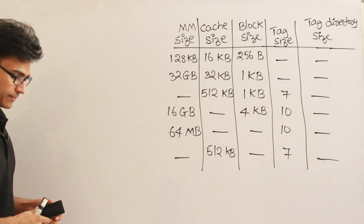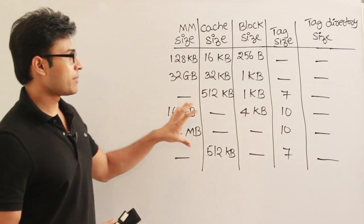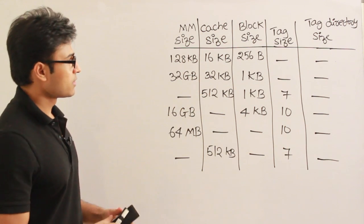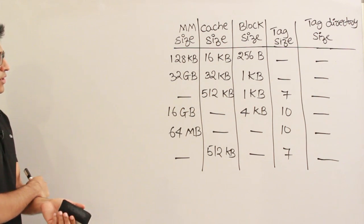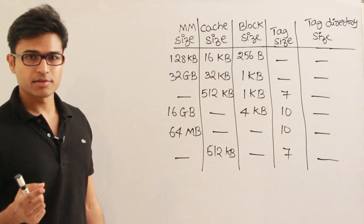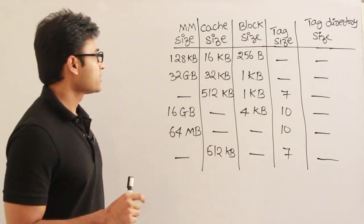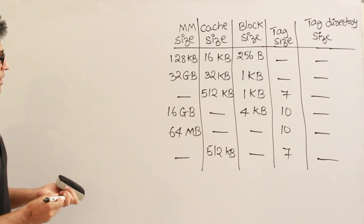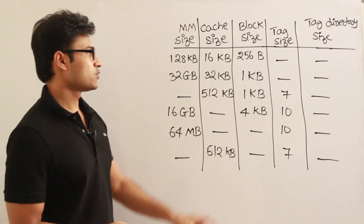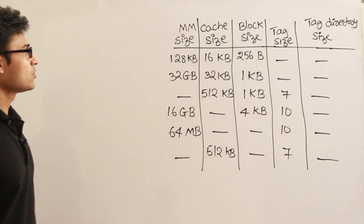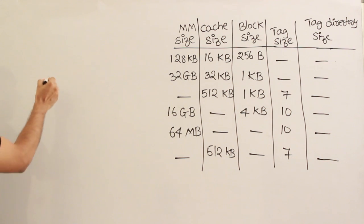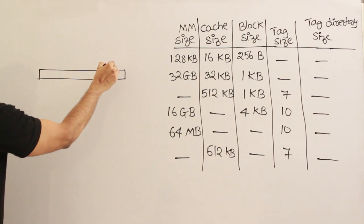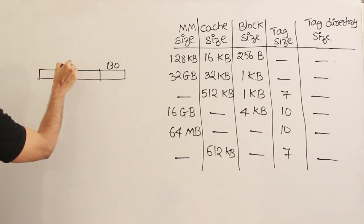Let's solve this problem for associative memory. Assume that associative mapping is used by the cache. These are the parameters given, and some are missing which we need to find. Also assume memory is byte addressable, meaning one word equals one byte. Main memory is 128KB, cache is 16KB, and block size is given. In associative mapping, the physical address is divided into two parts: block offset and block number.